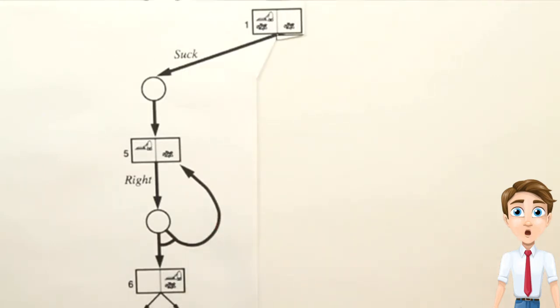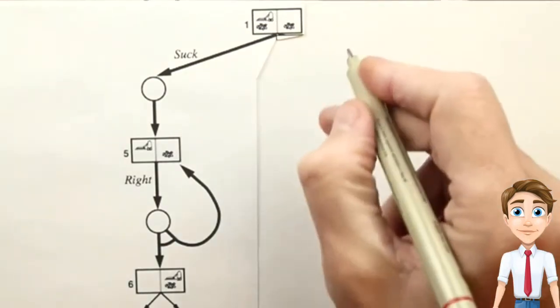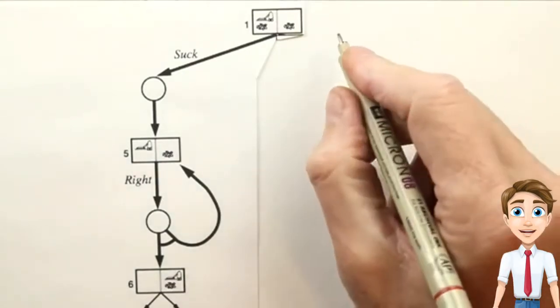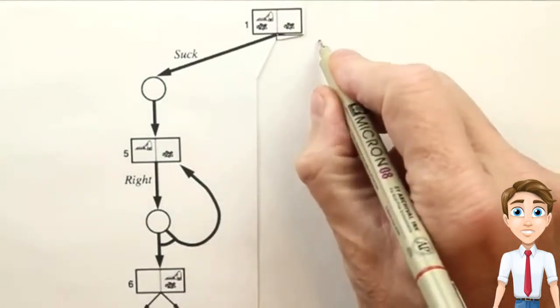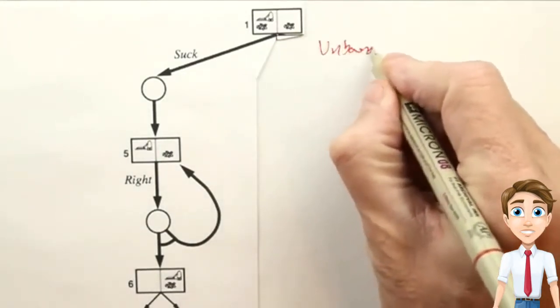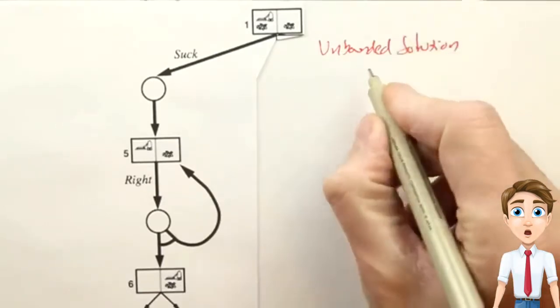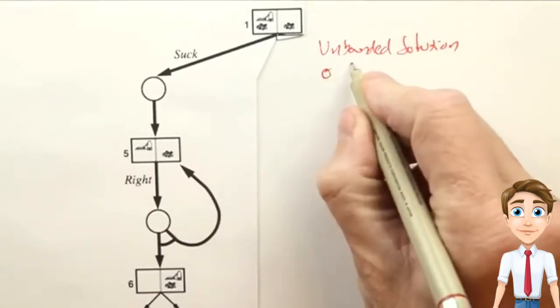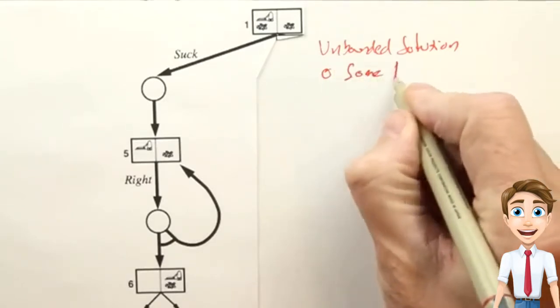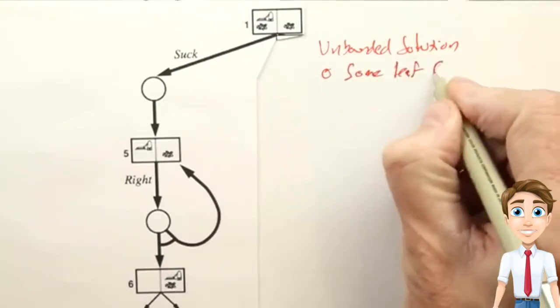Now, what I want to know is, for the single plan, what can we guarantee about it? So say we wanted to know, is this plan guaranteed to find the goal in an unbounded number of steps? And what do we need to guarantee that? So it's an unbounded solution. Do we need to guarantee that some leaf node is a goal?